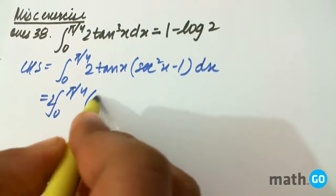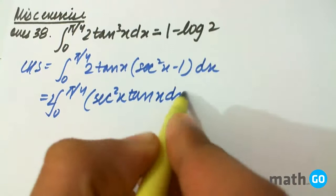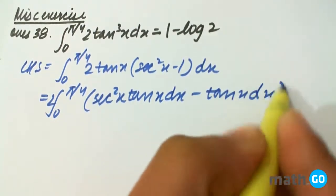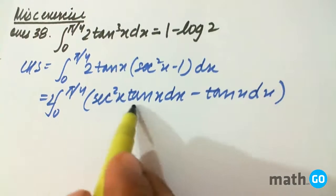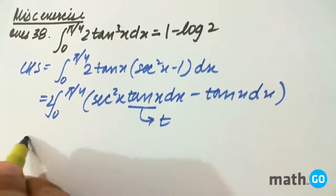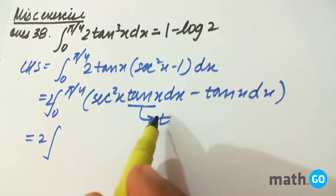We will be left with sec²x tan²x dx minus tan x dx. So simply if we keep this equals to t, this will vanish with dt, so we will be left with t dt.